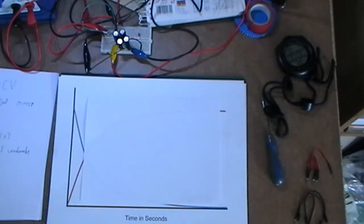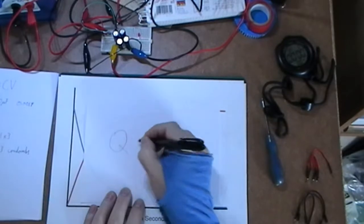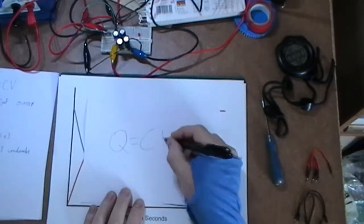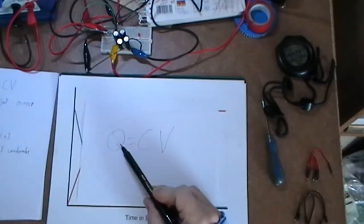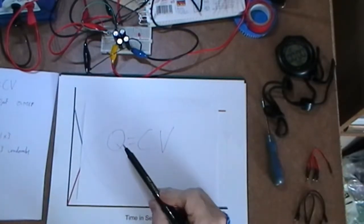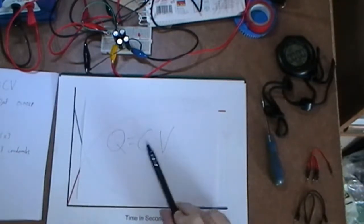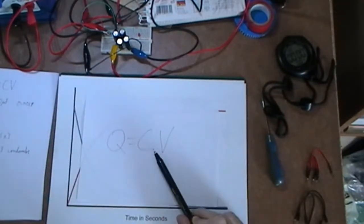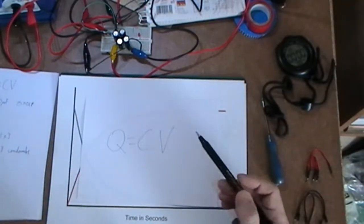OK, so what is the math for dealing with a capacitor? Now apparently the most basic one is this: Q equals capacitance times voltage. Now Q equals charge. There's charge, there's energy in the capacitor, and the capacitor is the capacitance measured in farads and the voltage measured in volts.